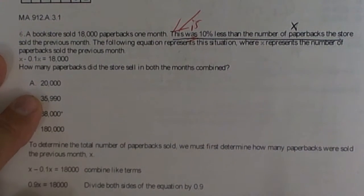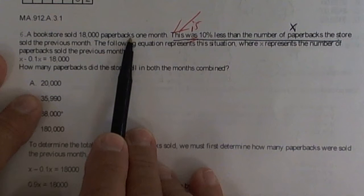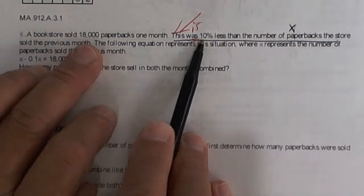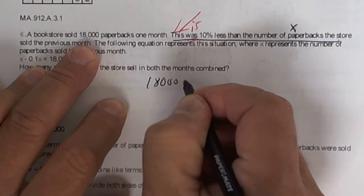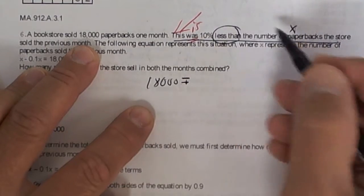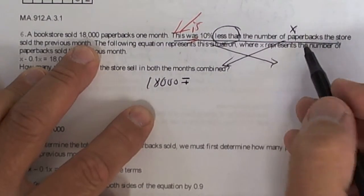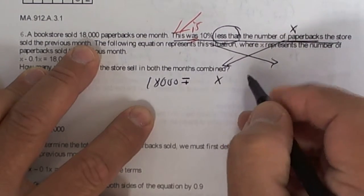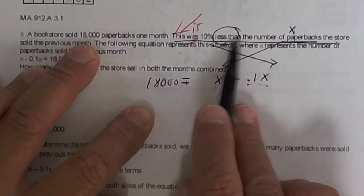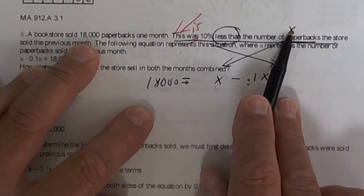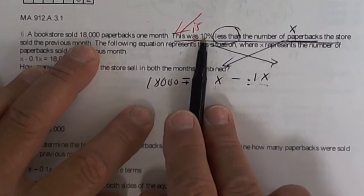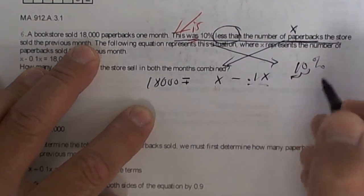Here's the last one I want to work. It says a bookstore sold 18,000 paperbacks one month. 18,000. And then it says this was, now was is like is. So 18,000, which is equals, 10% less than the number of paperbacks. Less than you got to switch them. So you're going to switch sides here. 10%. Now it doesn't tell you how many paperbacks, so that's x. So it's x minus .10 times x. It's 10% less than what they had sold the previous month. Less than you got to switch. We don't know how many they sold the previous month, so you put x. Switch them. And then 10% less would be a minus. And so it's .10. 10% as a decimal. You got to move it two places. It becomes .1.